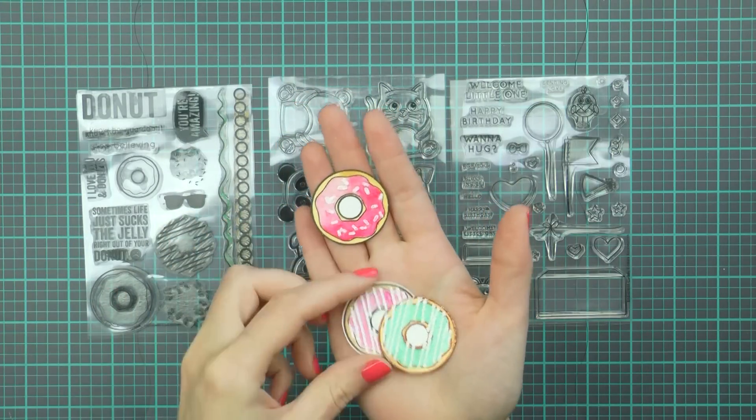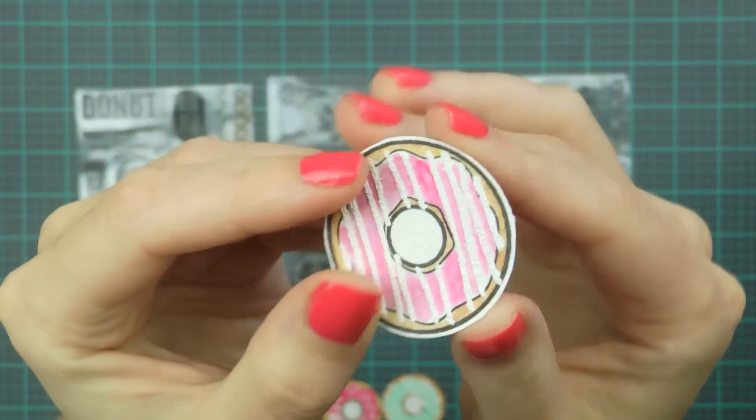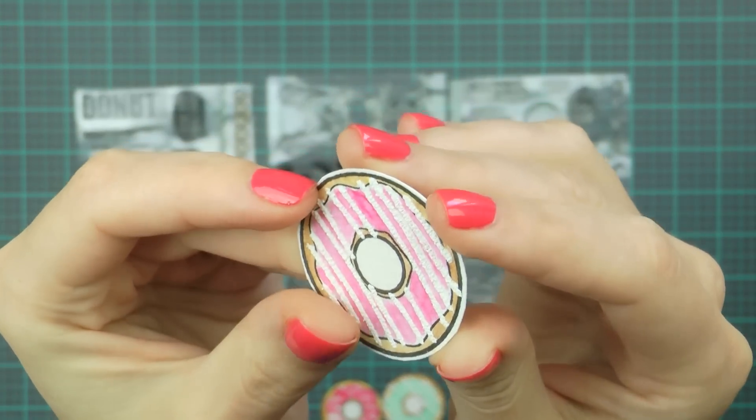Here's a quick look at the stamped and heat embossed donuts that I made using that embossing powder that I mentioned and I'll talk about it in detail in a second here.